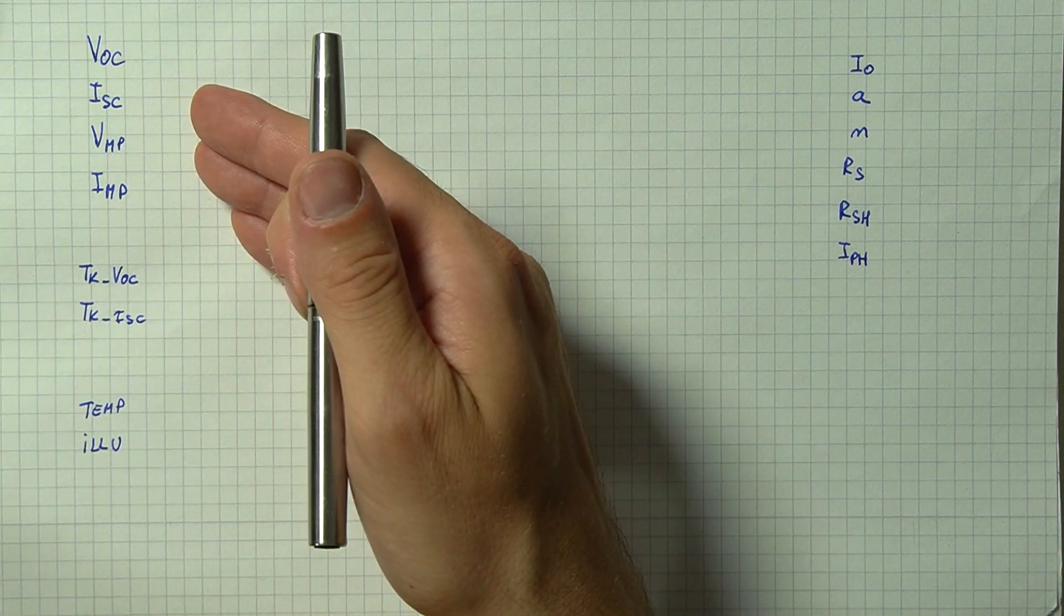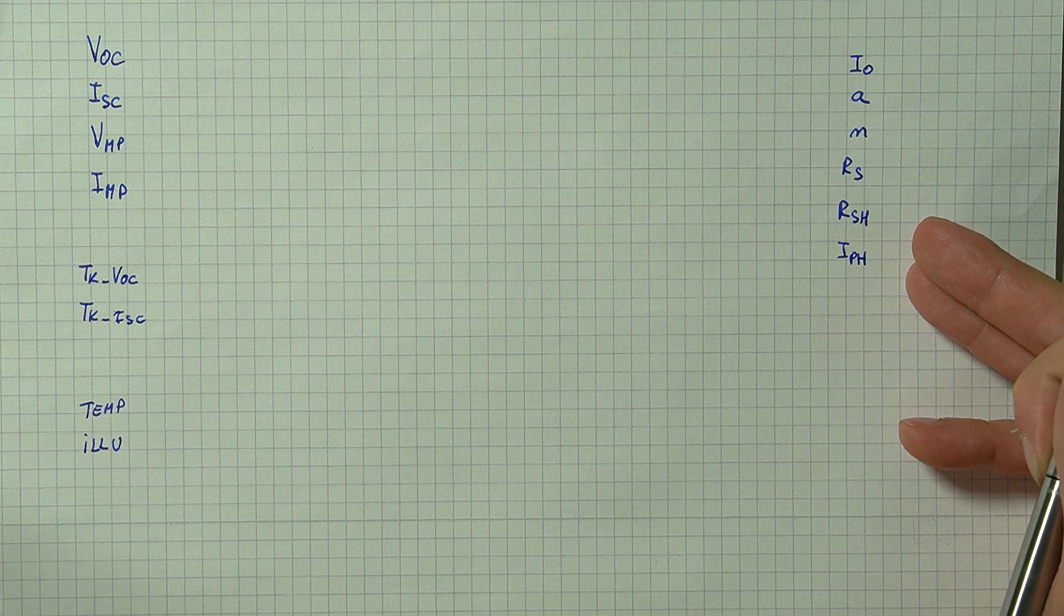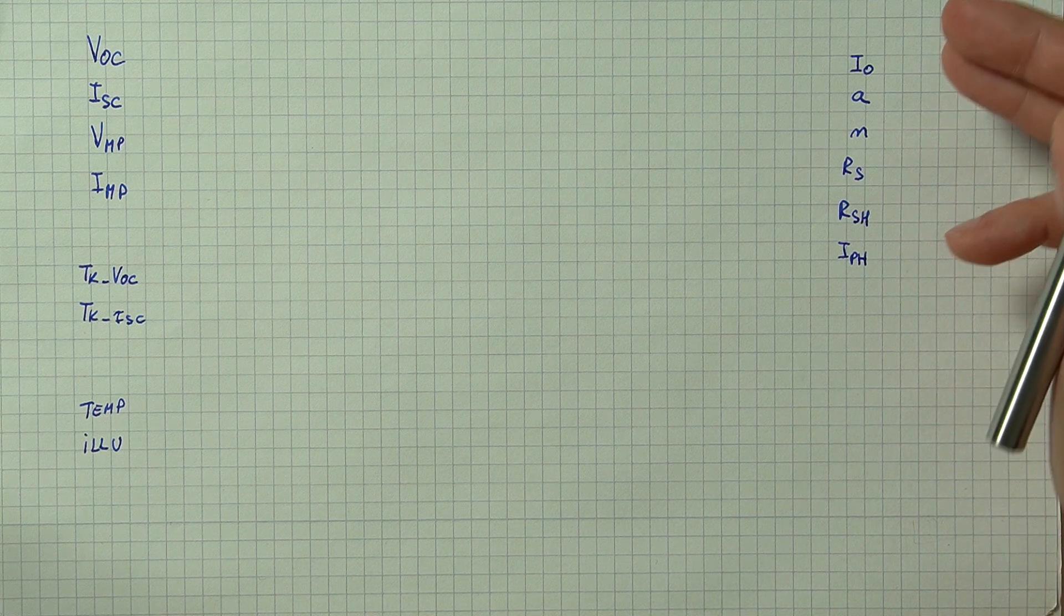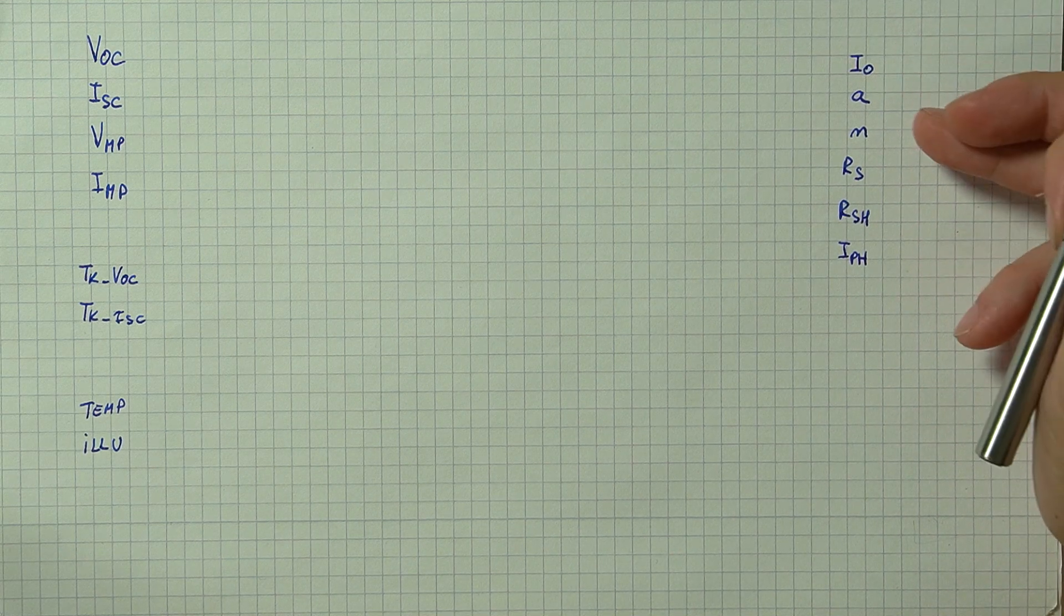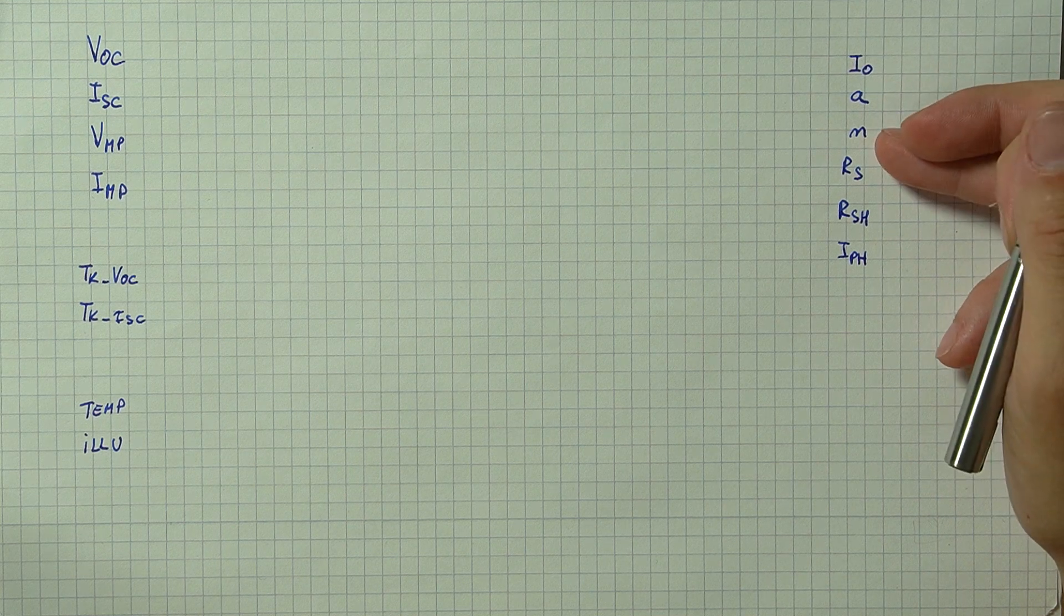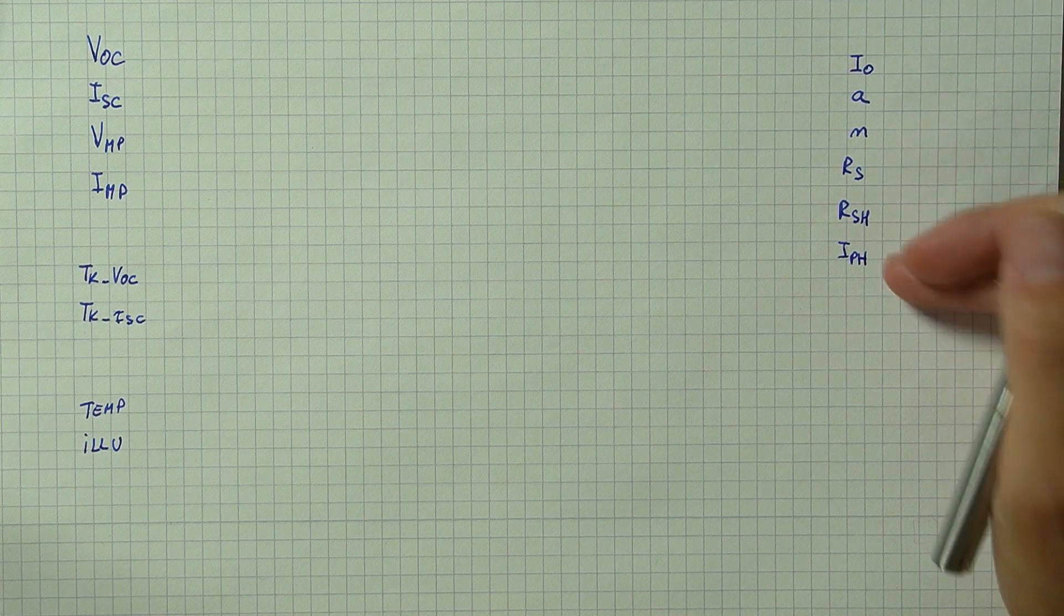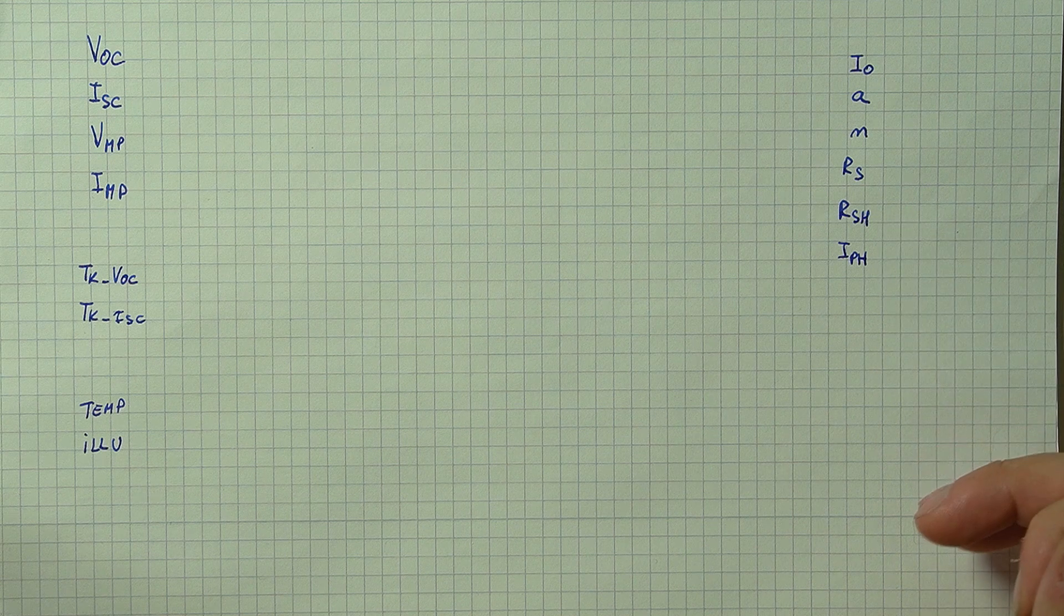So somehow we need to go from these values to the values that we need in our simulation model: our dark saturation current, ideality factor, number of cells, series and shunt resistance and then the photo current.